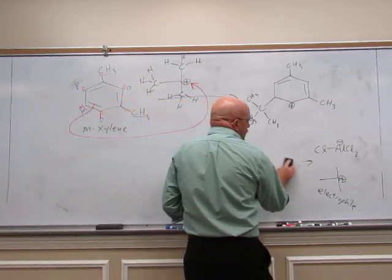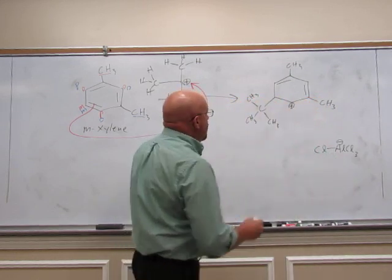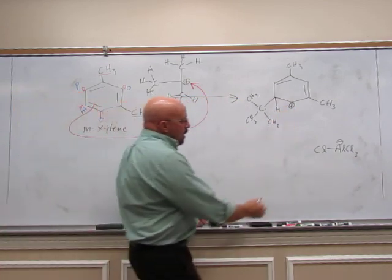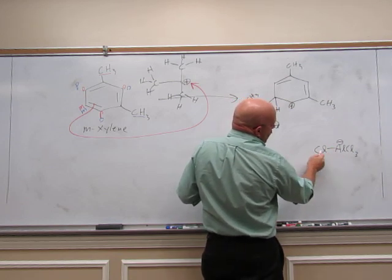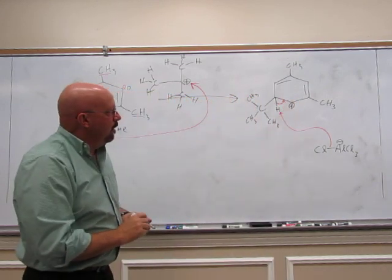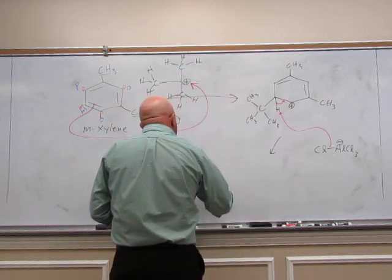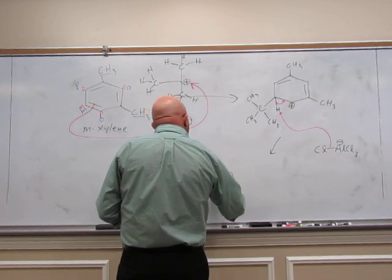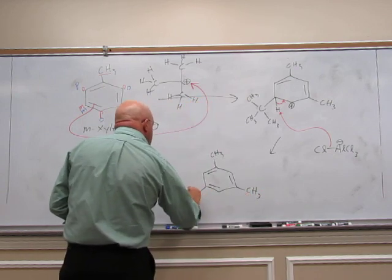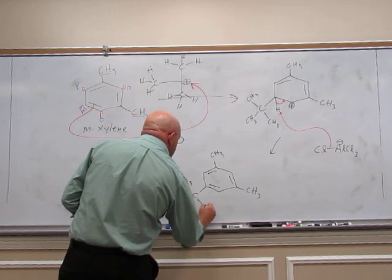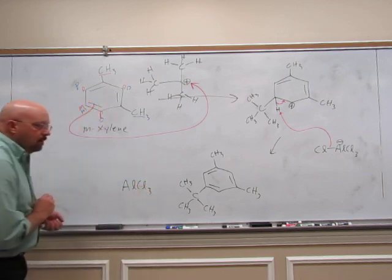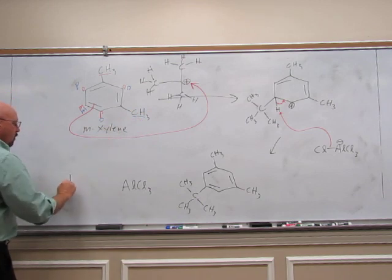We also need to get our catalyst back. Otherwise it's not a catalyst if you don't get it back at the end. So we need to pull off the hydrogen off of the carbon where we just put the electrophile. We're going to take chlorine off of this. It's going to come and grab that hydrogen. The electrons keep toward the plus charge to reform that double bond, reform our aromatic ring. And that gives us our product that we're making this week. We get our catalyst back and the chlorine grabbed the hydrogen.